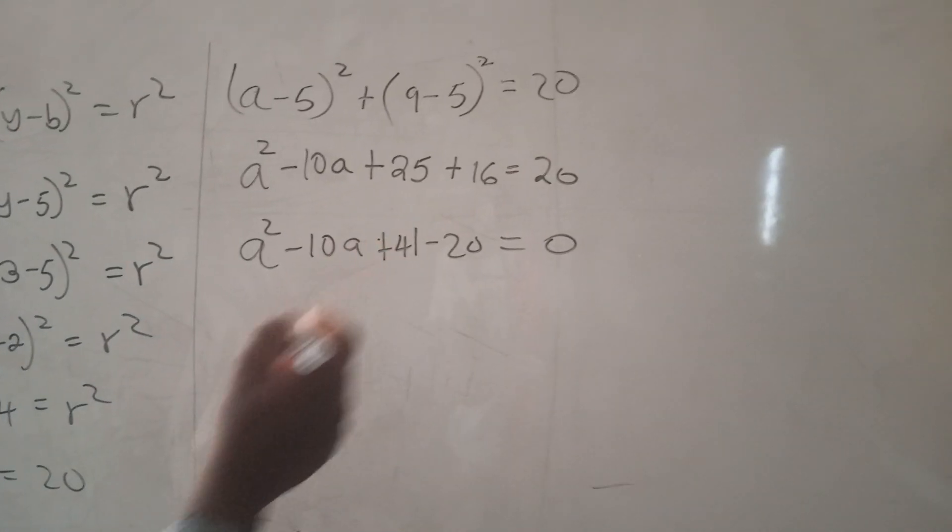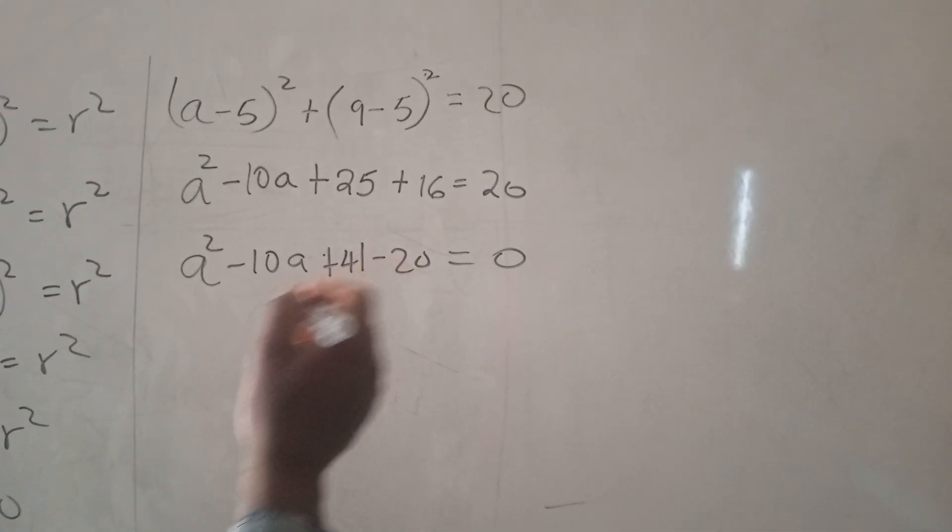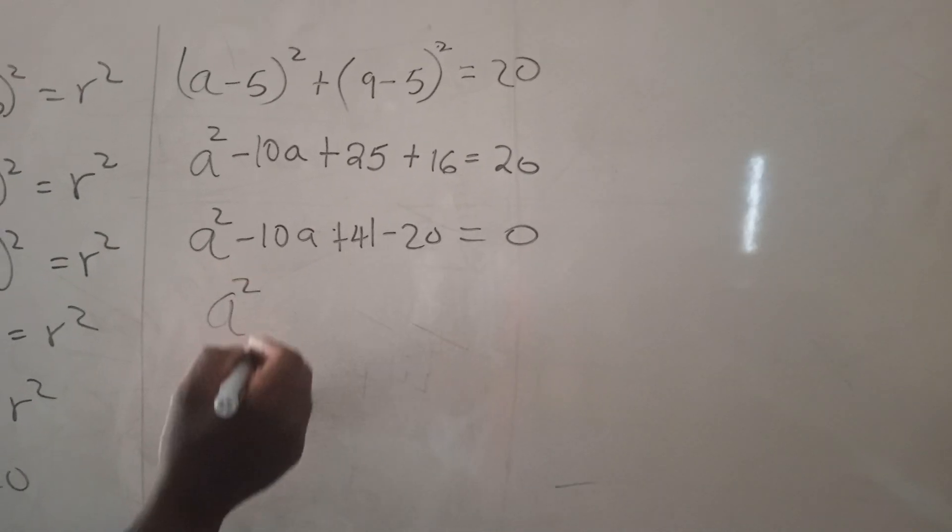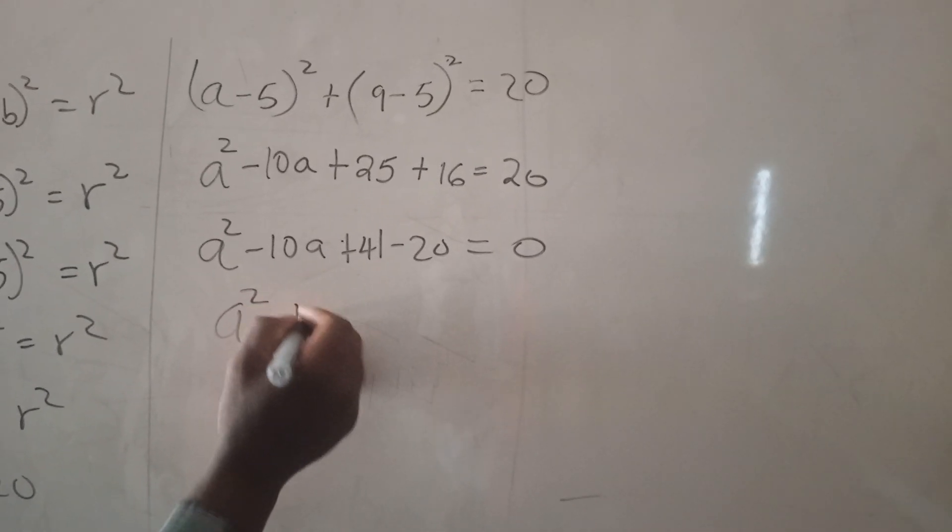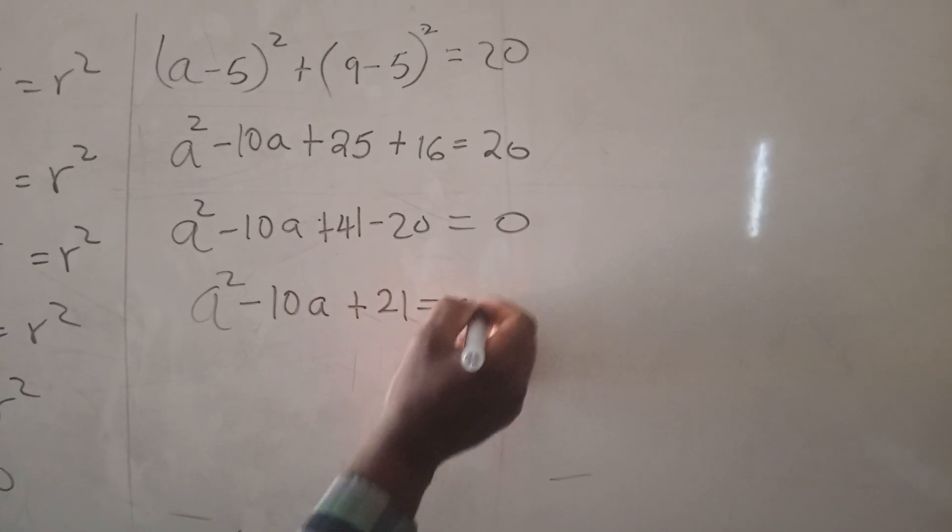When we subtract, we are going to have a² - 10a + 21 = 0.